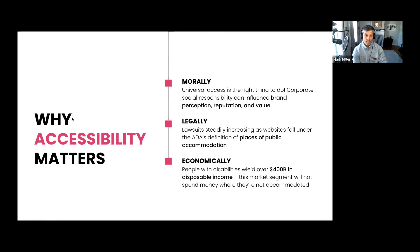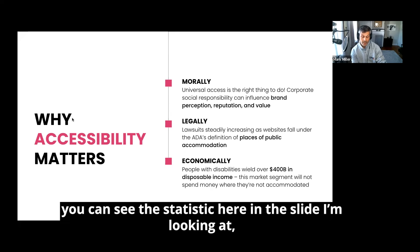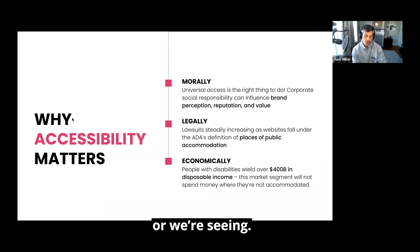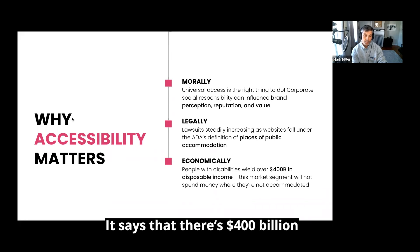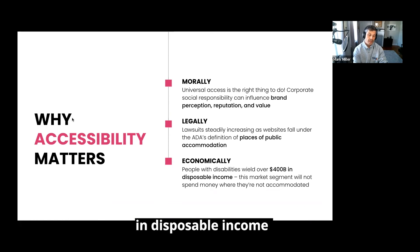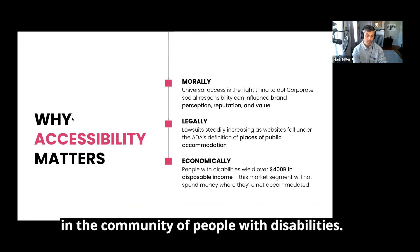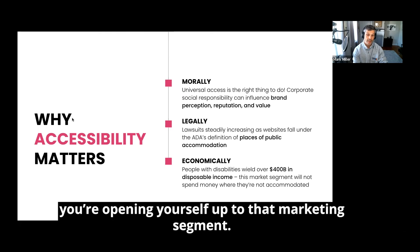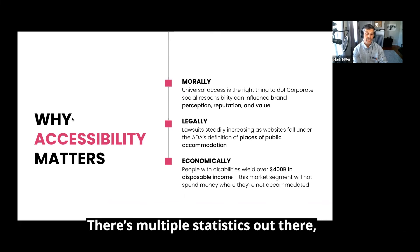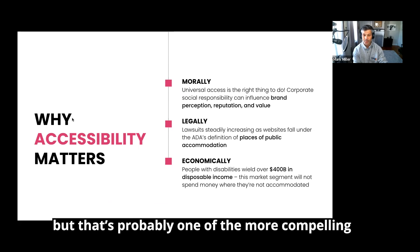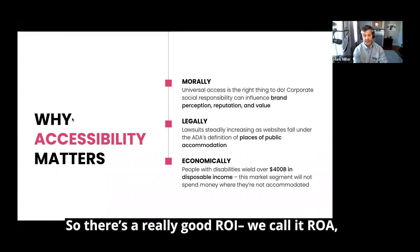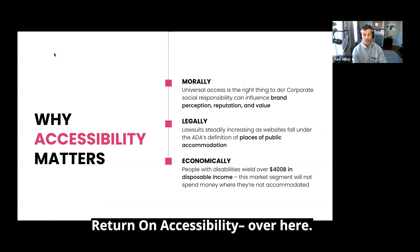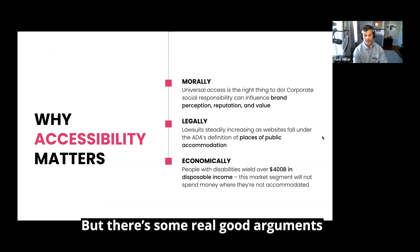Economically, as I mentioned when talking about morality, there's a statistic on the slide here — there's $400 billion in disposable income within the community of people with disabilities. That's a huge market segment. When you make your website accessible to people with disabilities, you're opening yourself up to that market segment. That's one of the more compelling dimensions upfront. There's a really good ROI — we call it ROA, return on accessibility — and there are some real good arguments for it.